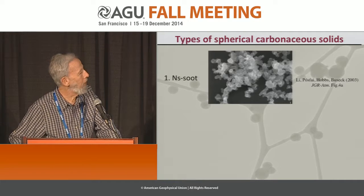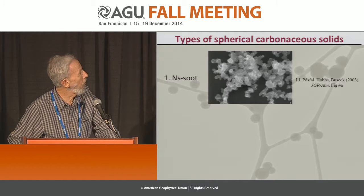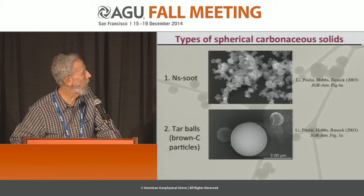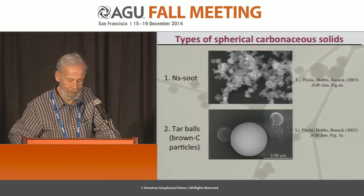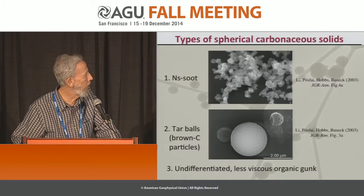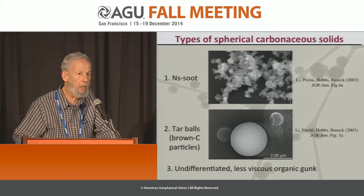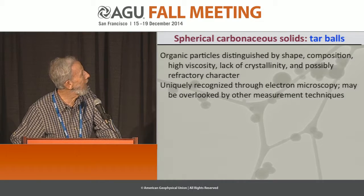Let me briefly summarize. There are three types of spherical carbonaceous solids. The first is NS-soot, or what many people call black carbon or refractory black carbon. Then tarballs. And a third is something undifferentiated — less viscous organic gunk. It's not a totally technical term, but it's very descriptive, as you'll see.